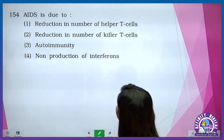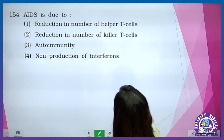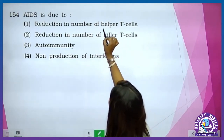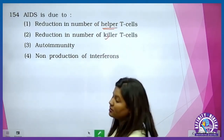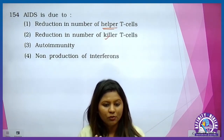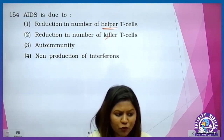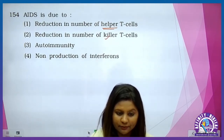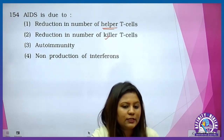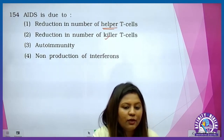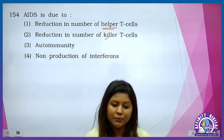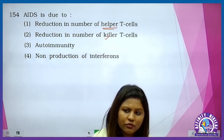AIDS is due to reduction in the number of helper T cells, not the killer T cell. Killer T cell jo hai wo hai cytotoxic T cell. HIV virus body me enter karne ke baad, wo macrophage ko pehle attack karta hai. Macrophage is the factory of HIV. Uske baad after certain period, us mein ye capability develop ho jata hai ke wo helper cells ko target kare. Helper cell ka number hota hai around 1200 per cubic ml.